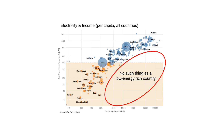It is a graphic which seems to show a very strong correlation between basically the wealth of a country and the energy used by a country. And then it says there is no such thing as a low energy rich country.